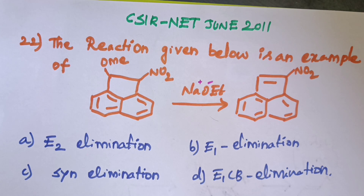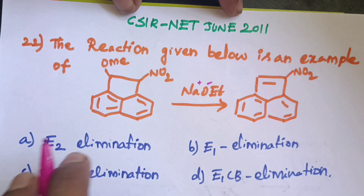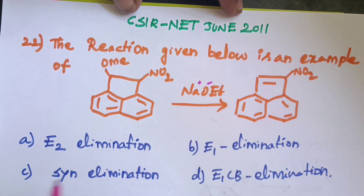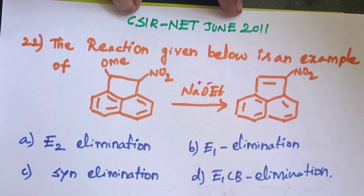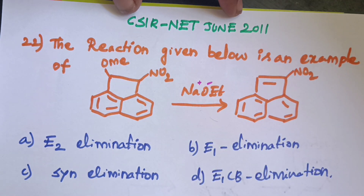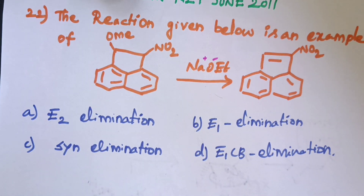CSIR Net June 2011, one organic question. The reaction given below is an example of — we have a reaction under basic condition, and we need to identify which type of elimination this product forms. Now we have 4 options.